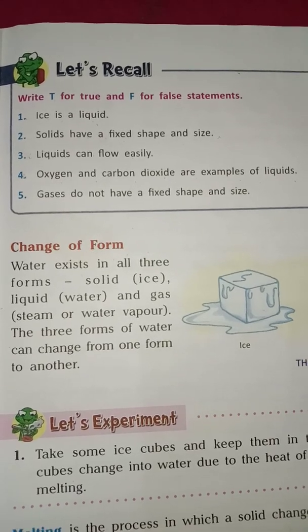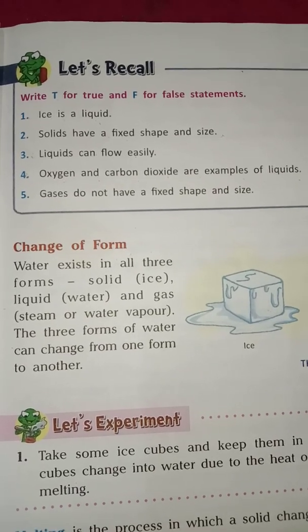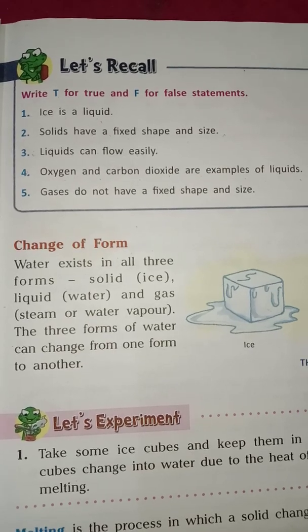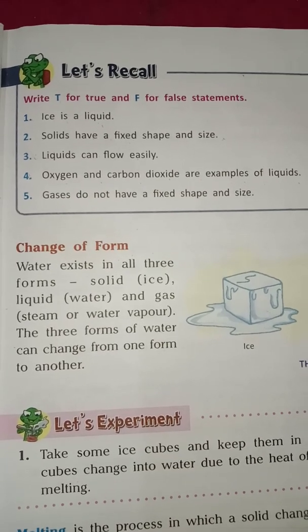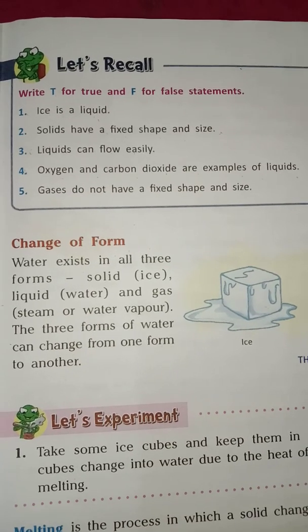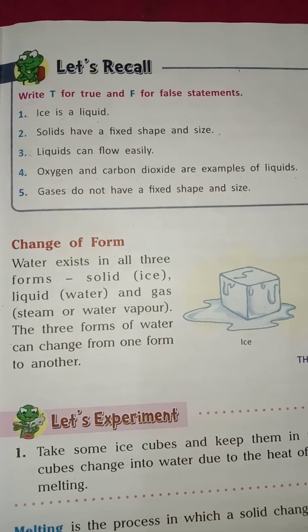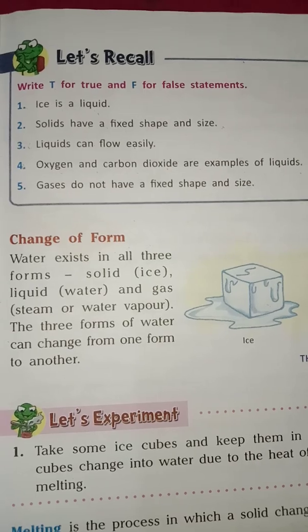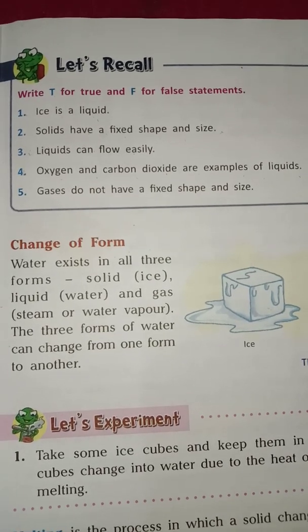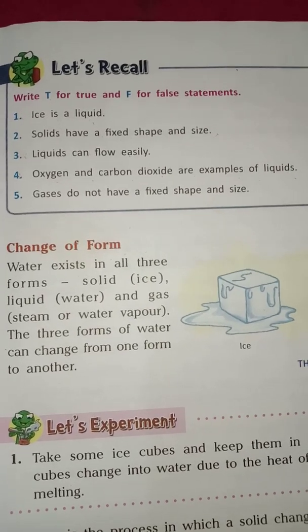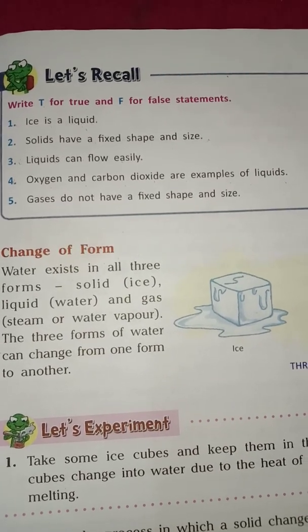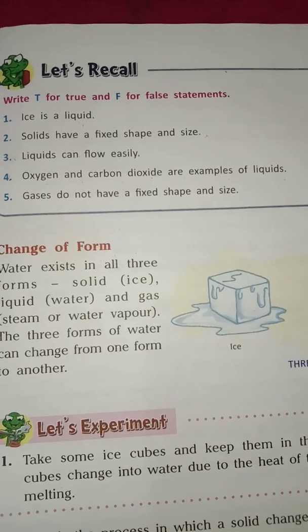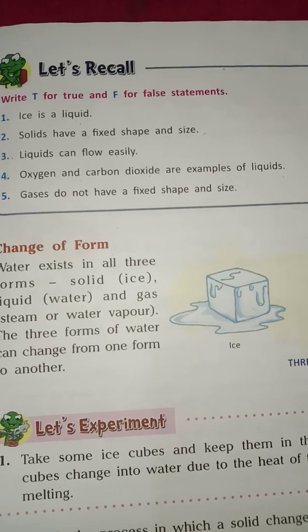Students who have the science book will do exercises in your science book — true, false, fill in the blanks, name the following, tick the correct option. Only question answers and matching you will do in your science copy. And students who don't have books will do the work in your science copy. Okay?